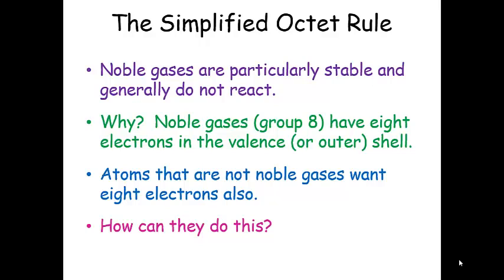This simplified octet rule is going to give us a way to rationalize this. The first thing we need to think about is that noble gases, any of those elements in that last column on the periodic table, main group 8, they are particularly stable and they generally don't react.